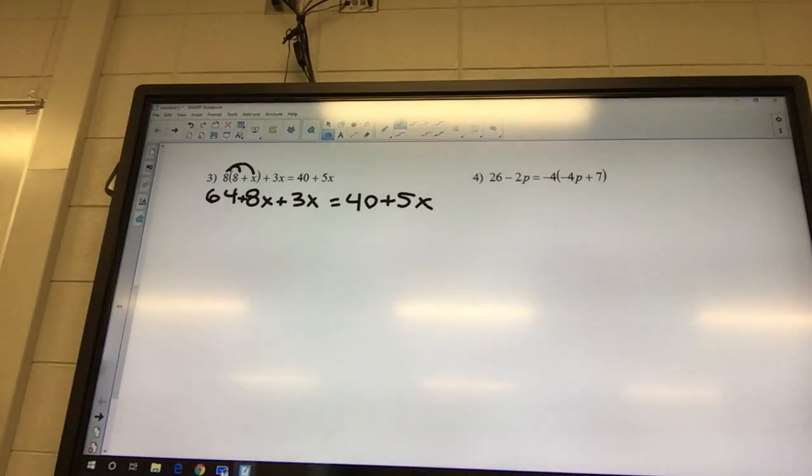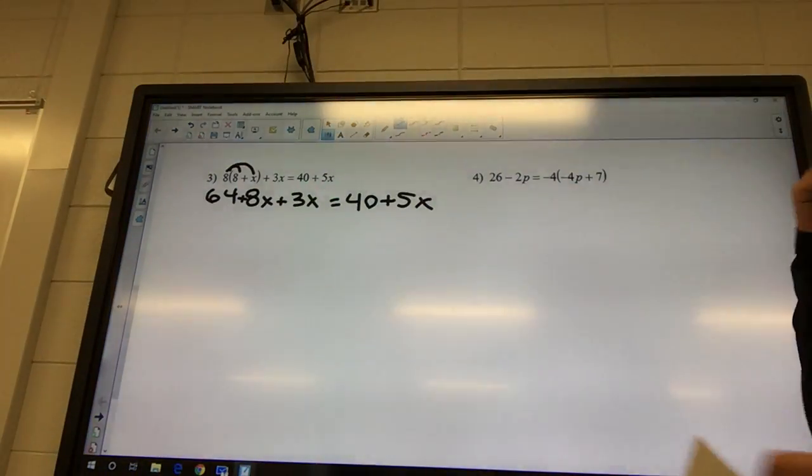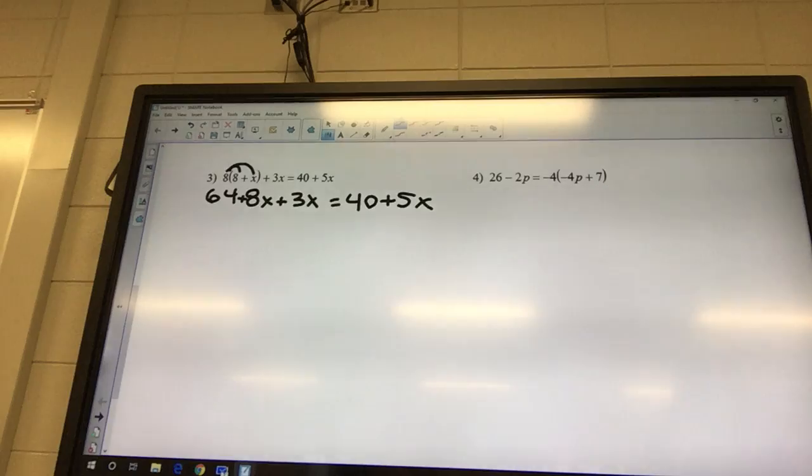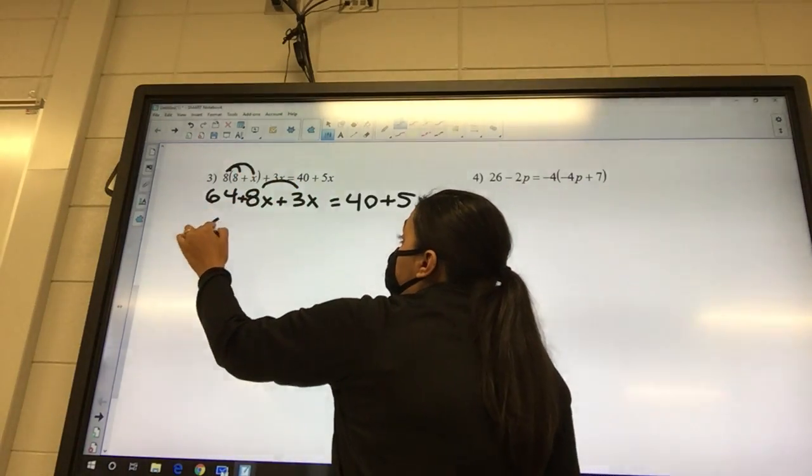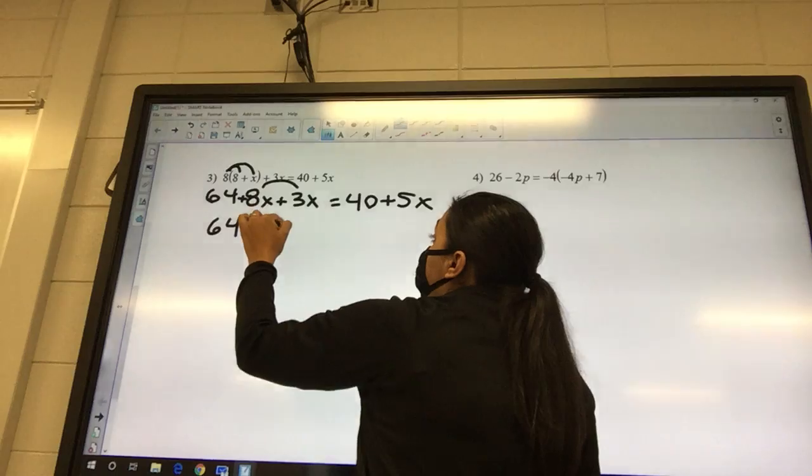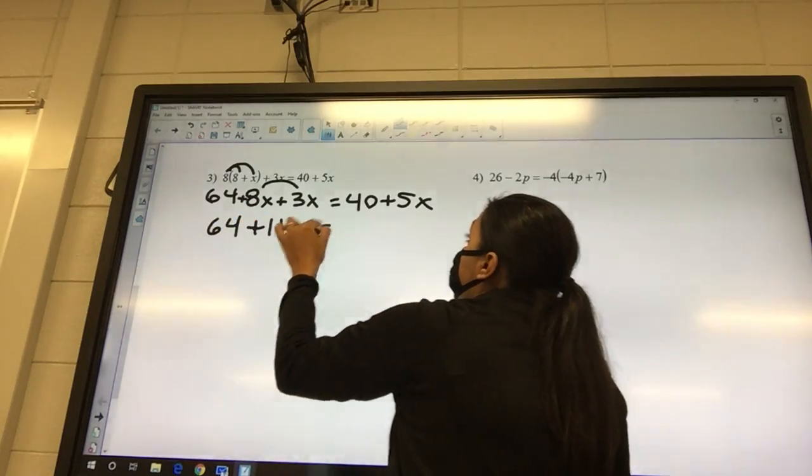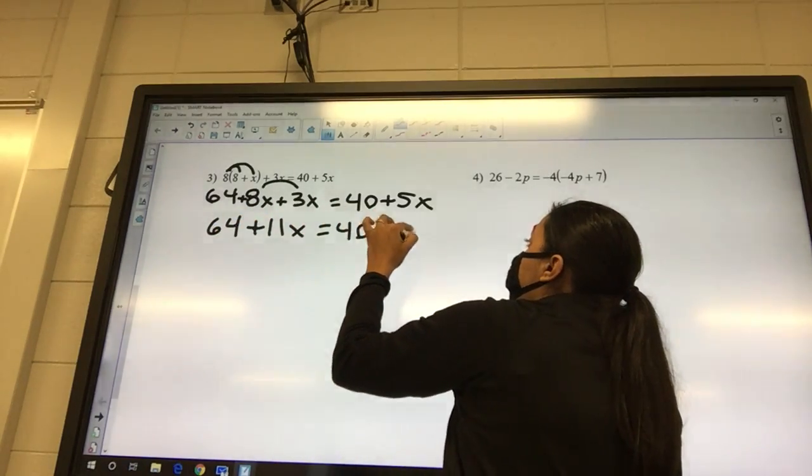Your next step on these, always, is going to be to combine like terms. So what can we combine? The 8x and the 3x. So I got 64 plus 11x equals 40 plus 5x.